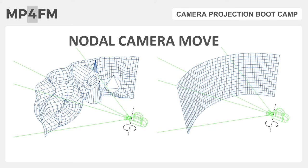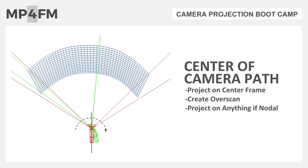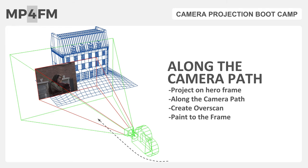You could project onto one surface or another, and it would look exactly the same because there is no parallax. You'll set your projection camera in the middle of the shot camera path, and even though it's not translating, it is rotating — panning, tilting, or some combination. You need to figure out what the middle of that rotation is, open up your focal length, and project to have full coverage.